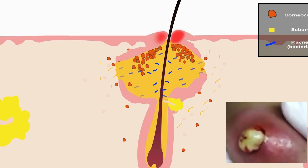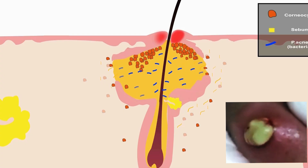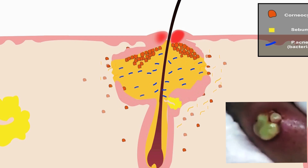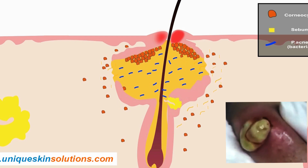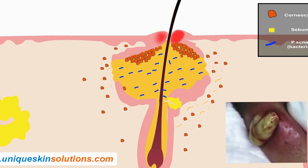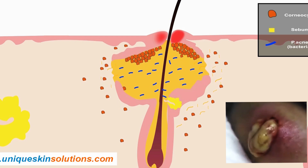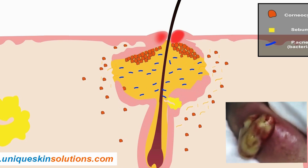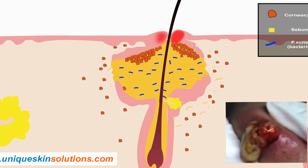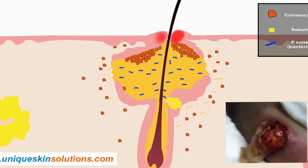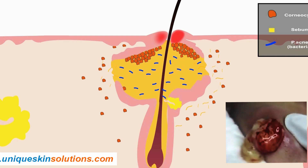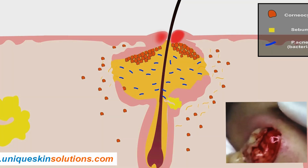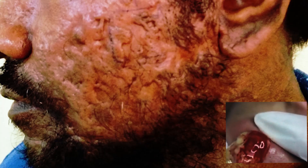In nodular cystic acne, there is further bacterial overgrowth, dead skin, and sebum production, leading to ugly and disfiguring nodules and cysts. Cysts present as large, painful, pus-filled lumps going deep inside the skin. This eventually leads to scarring, commonly manifesting as acne scars.